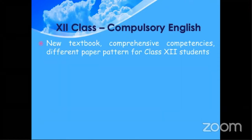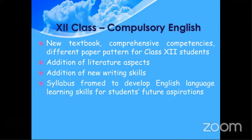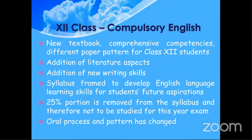This compulsory English textbook is totally new. It has comprehensive competencies and you are learning different things. It is an addition to the literary aspects — focus is also on literature, not only on language. There are new writing skills in the syllabus to develop English language learning skills for students to achieve their future aspirations. This textbook is going to be a lifelong support for 12th standard students. The 25% syllabus that is removed is already known to many students. We are also going to speak about the oral process and pattern that has changed for this year.